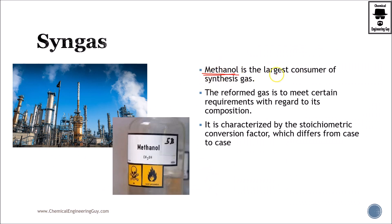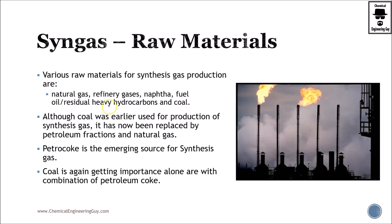Methanol is the largest consumer of synthesis gas. The reformed gas must meet certain raw material specifications. What are the raw materials? You can already imagine — gas, because natural gas is mainly methane. We're going to see some chemical equations later on. Refinery gases: instead of burning all this material, sometimes you recover and treat it.